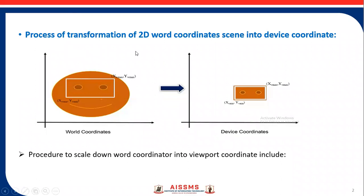The process of transformation of a 2D world coordinate scene into a device coordinate system involves multiple steps. Window to viewport transformation is necessary because the size of the window and the viewport may not be the same. The actual scene selected by the window needs to be rescaled to fit into the viewport. Let xwmin, ywmin, xwmax, and ywmax represent the lower-left and upper-right corner points of the clipping window respectively.